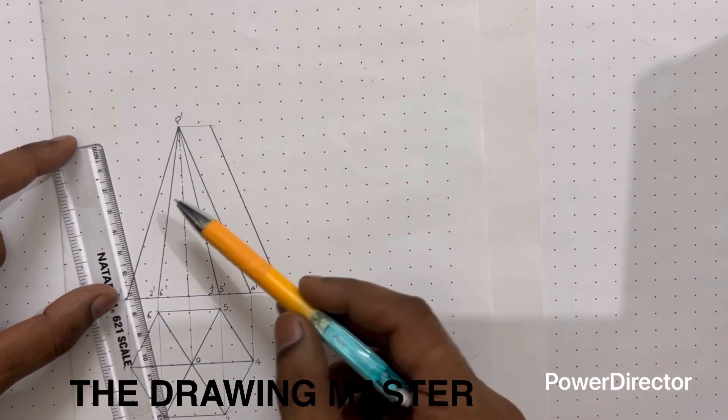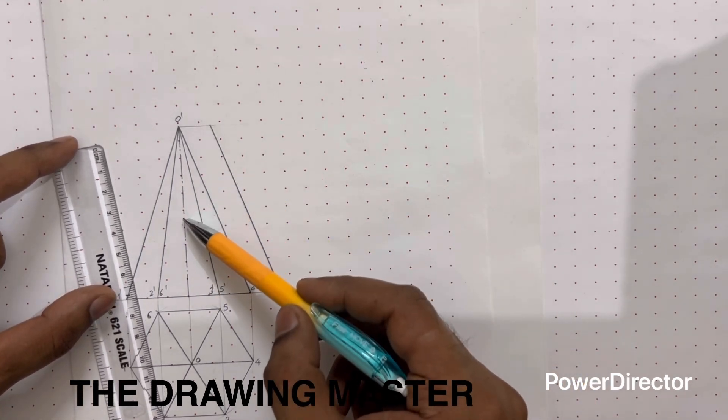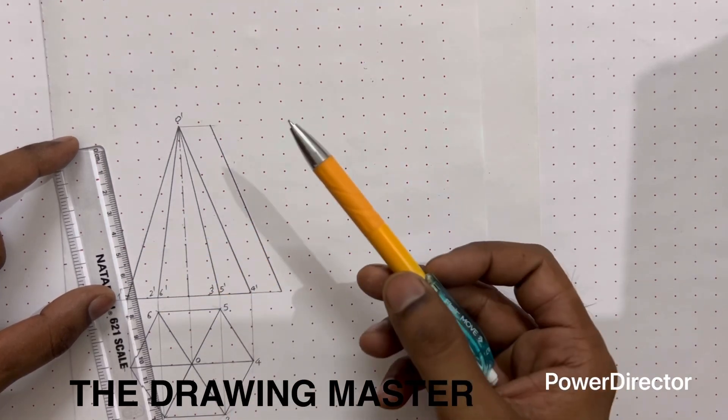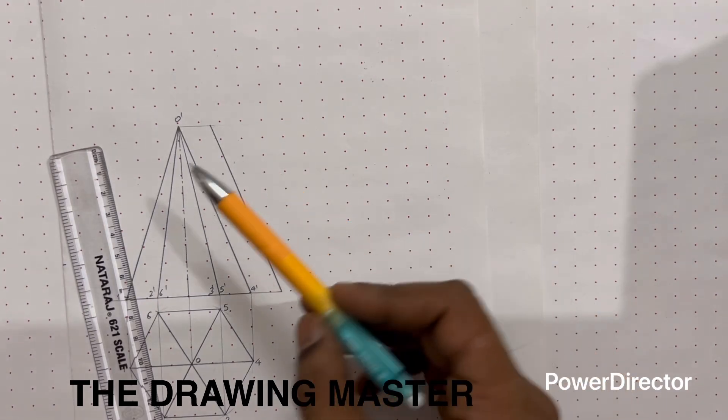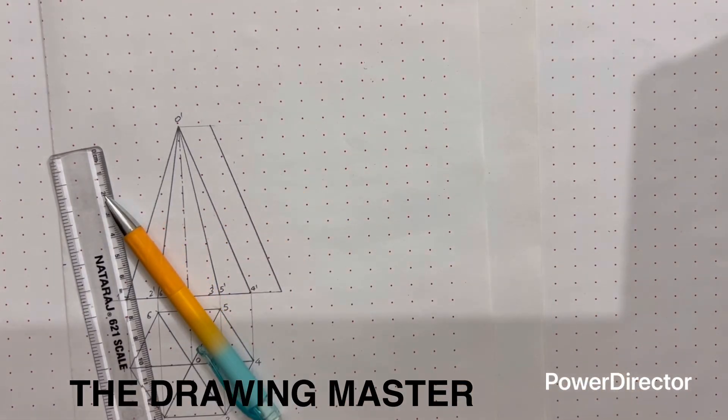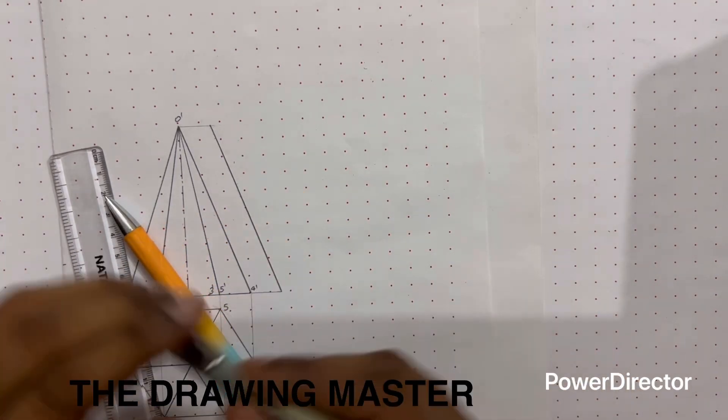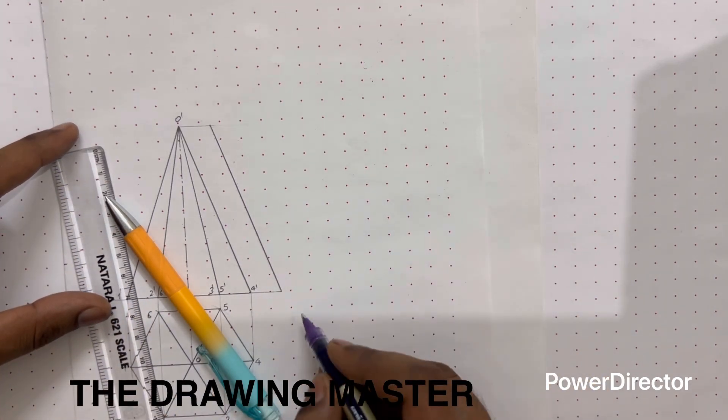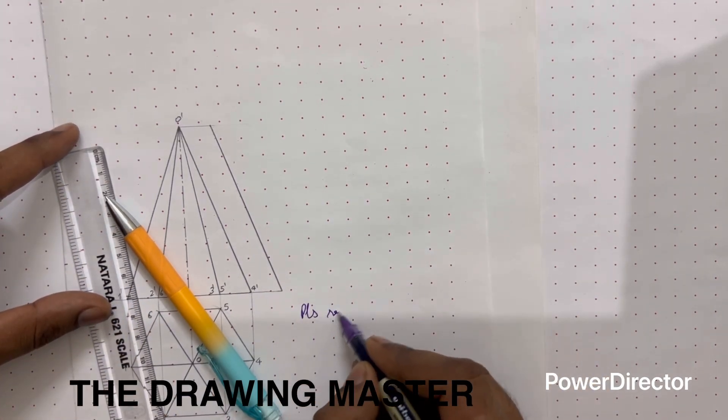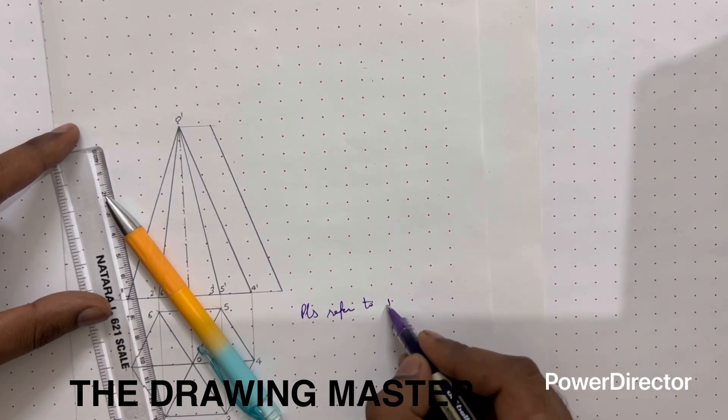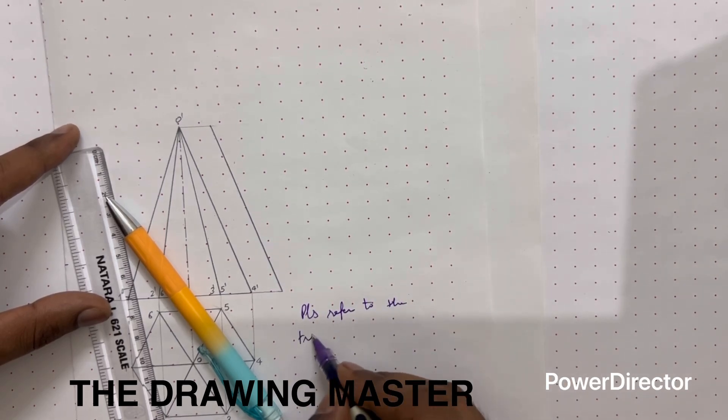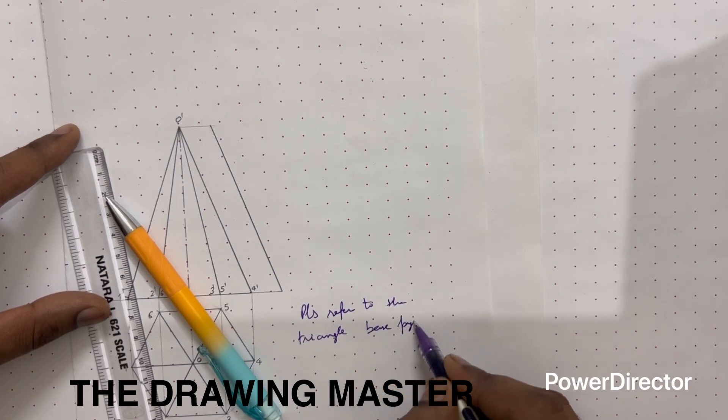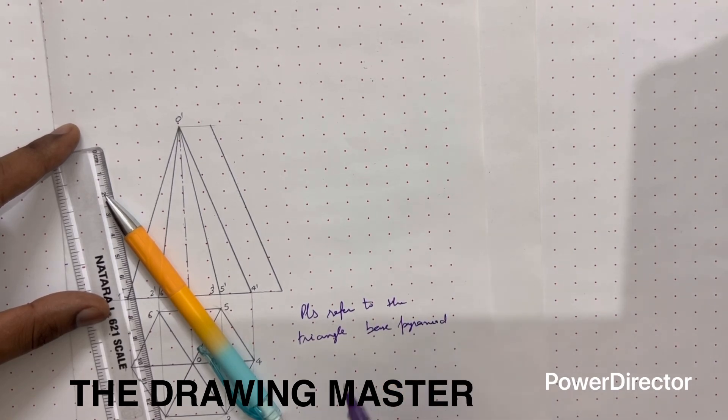As per the statement, cutting plane is also given. The cutting plane is passing through the midpoint of the axis at an angle of 45 degrees. So the remaining procedure is just the same as the previous one - triangle base, square base, and pentagonal base pyramids. How to do the remaining part as per the statement, please refer to the triangle base pyramid video.